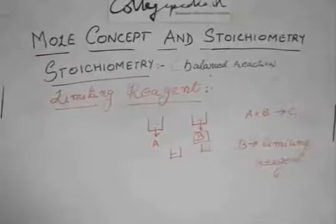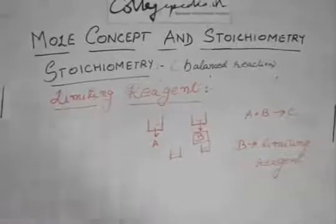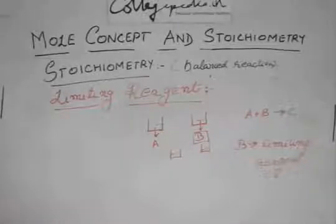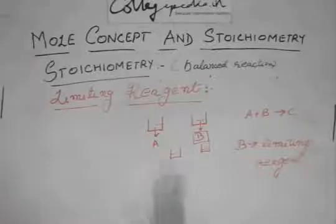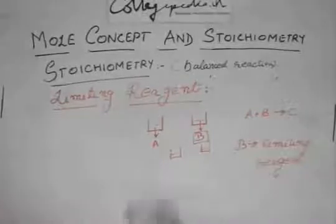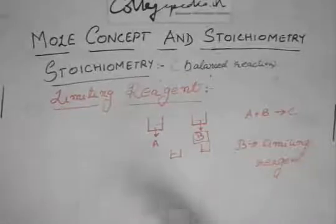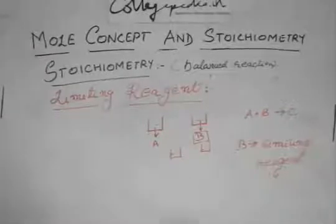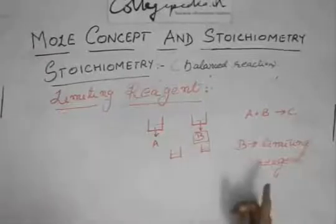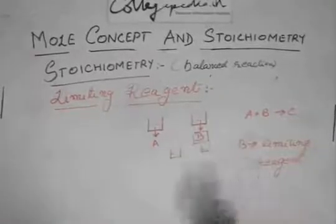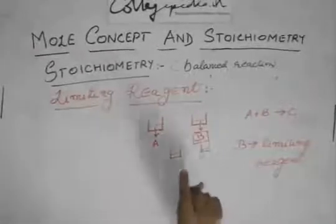So in most questions what they will give you is that this much of A is taken, this much of B is taken, how much of C would be formed. So this A and B will not always be in the perfect ratio of moles. You will see that one of it is always left over and one of it gets consumed totally. So you have to identify which one gets consumed, which would be the limiting reagent, and then proceed with the calculation of other weights or other volumes with that limiting reagent.